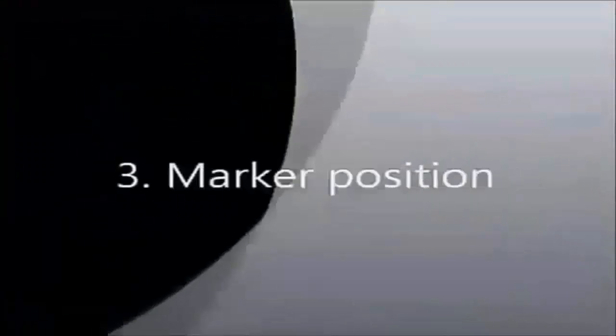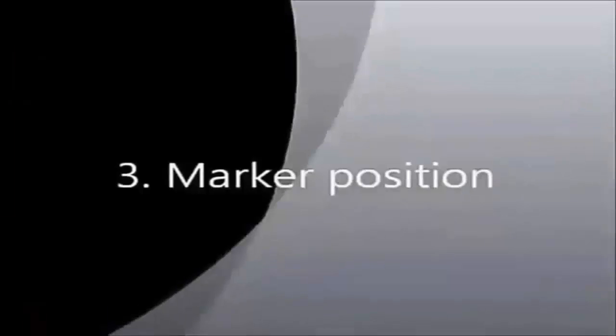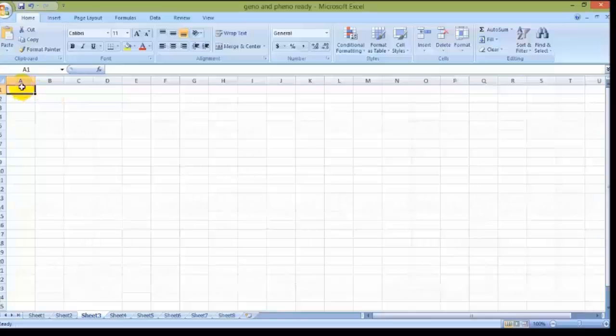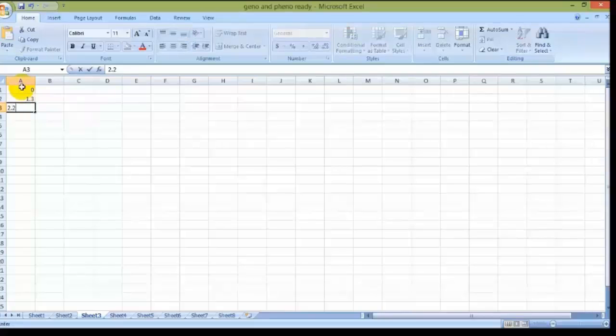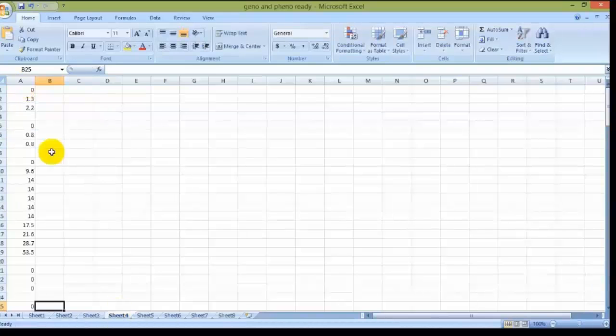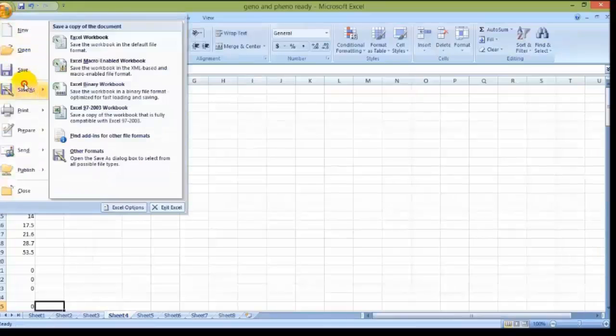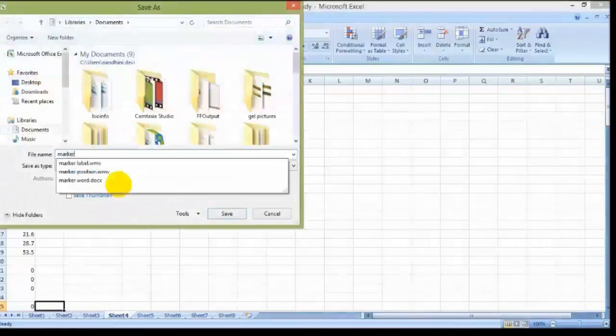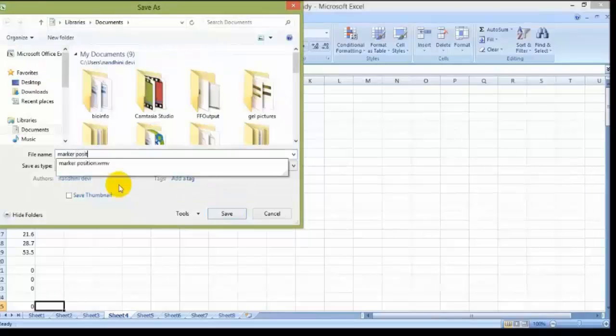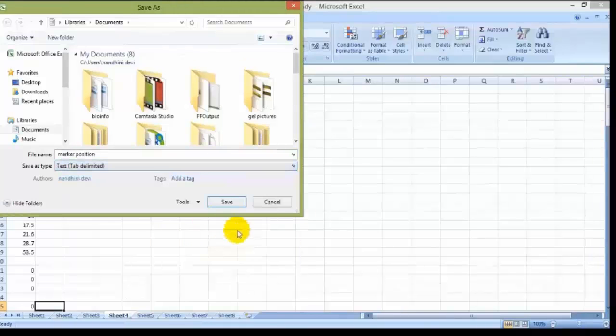Marker position is the next step in data file preparation. The marker positions were entered in the first column of a new Excel sheet. Data of marker positions were started from position 0 for the first marker of chromosome 1, and this is for all chromosomes. A blank line has to be left in between the two chromosome markers. The marker positions were generated from map maker software. This Excel file has to be saved in the name of marker position with the extension of .txt file format.